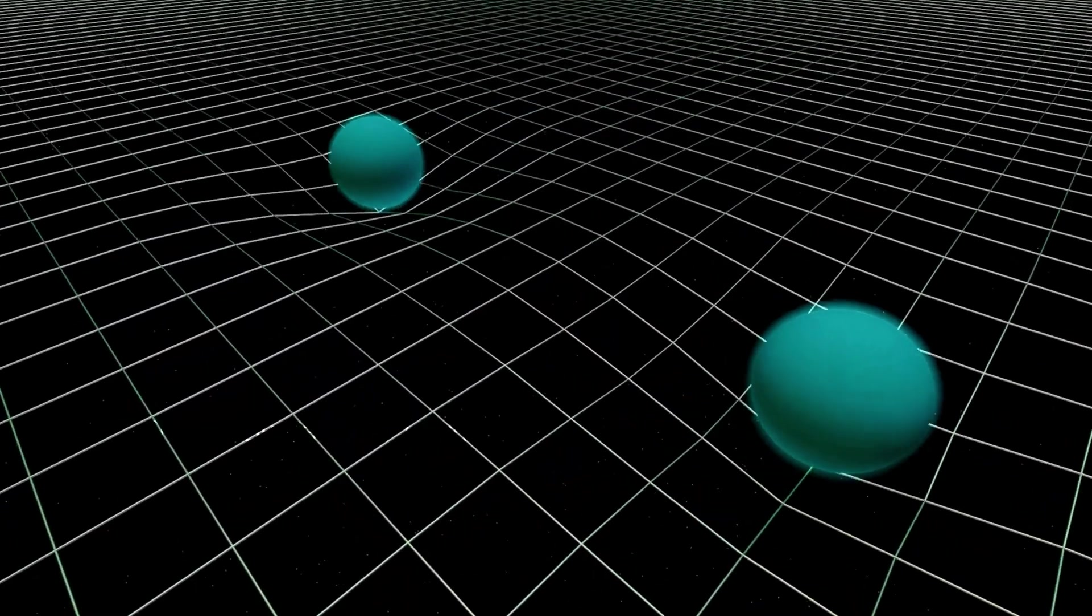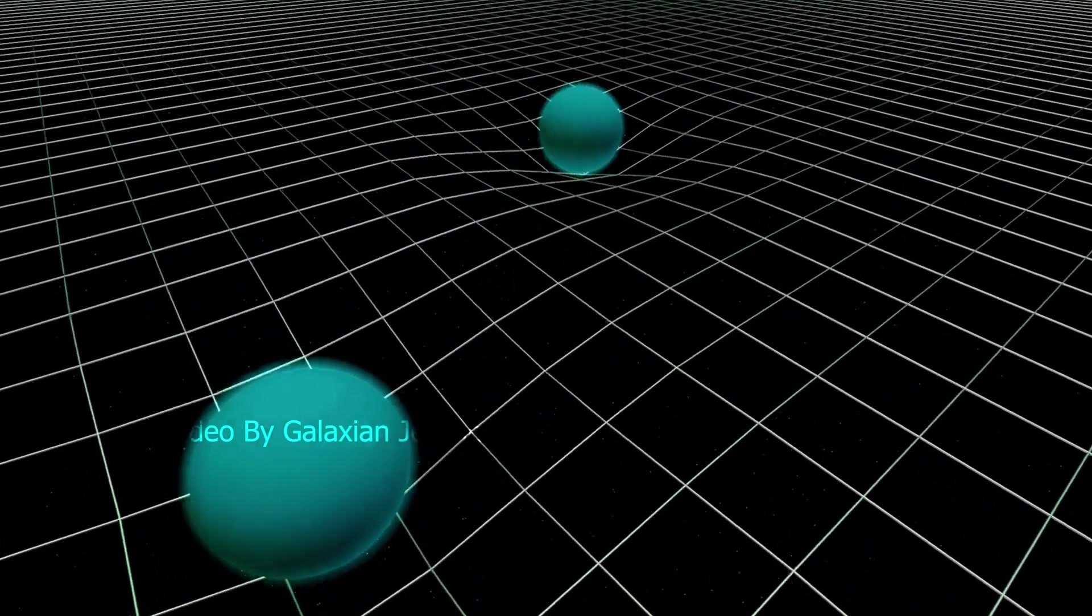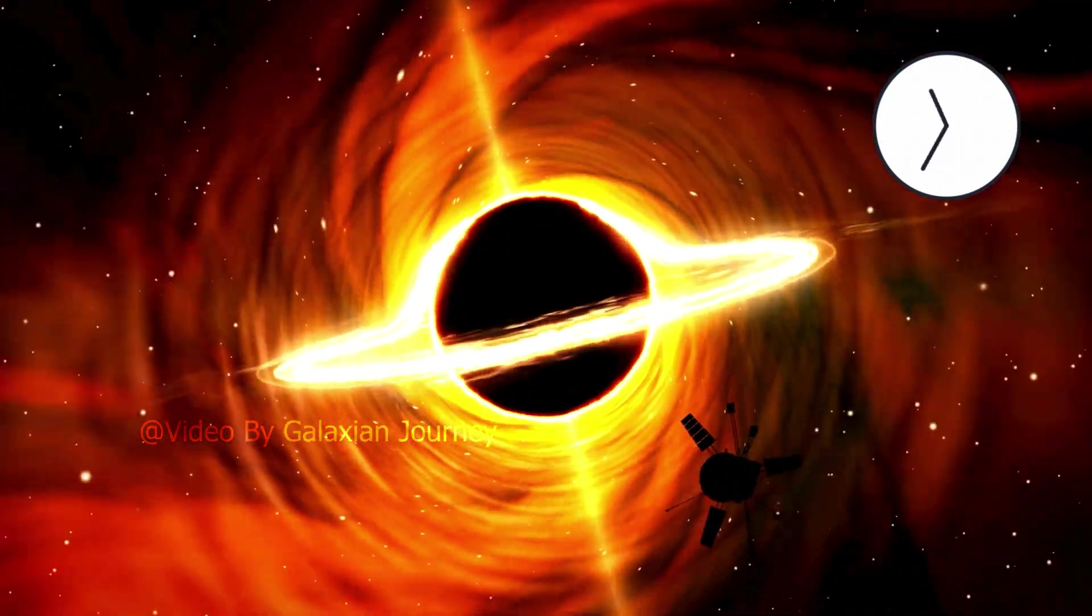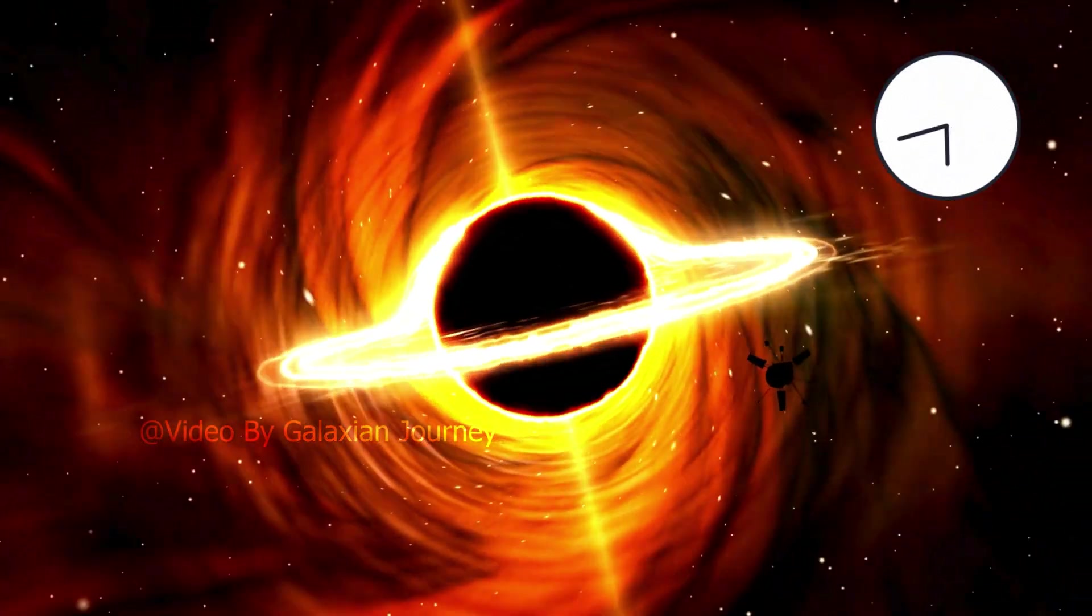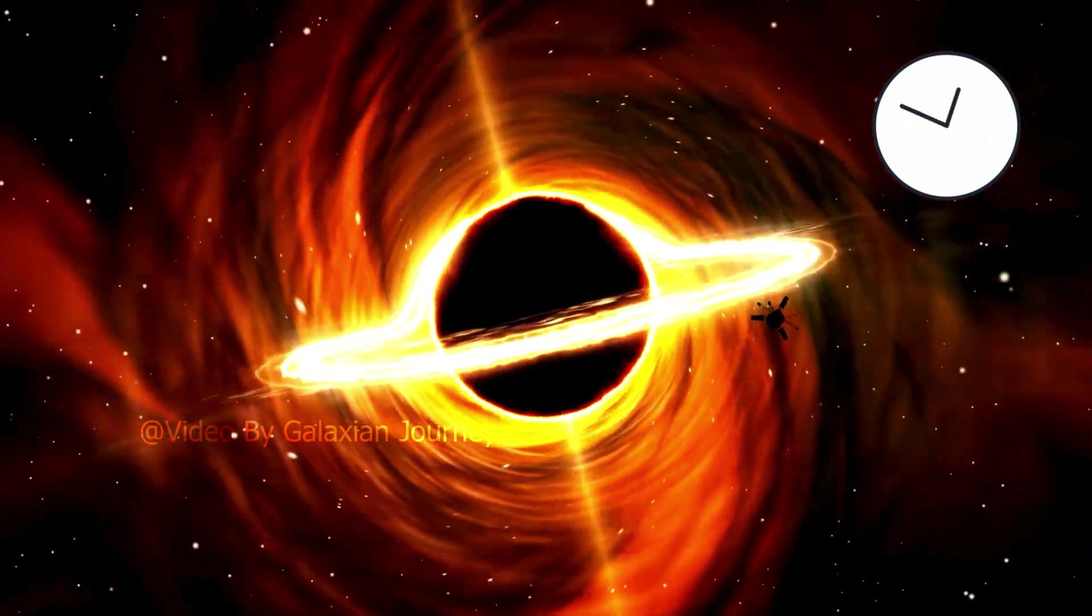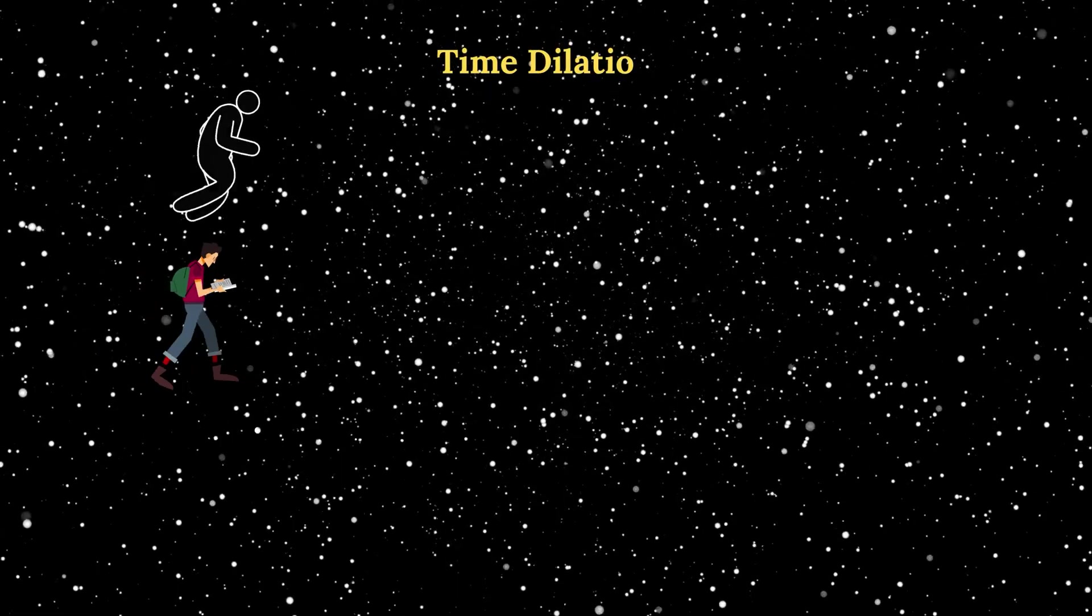One of the most surprising effects of a black hole is that it affects not only space, but also time. Time is not the same everywhere in the universe, but it depends on the speed and the gravity of the observer. This is another prediction of special and general relativity called time dilation.